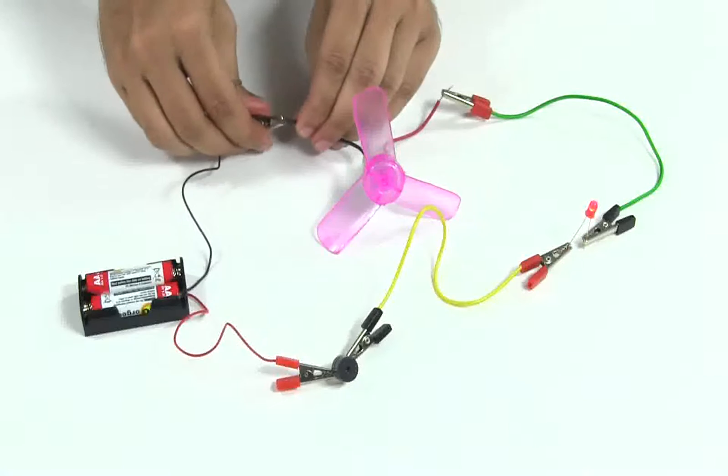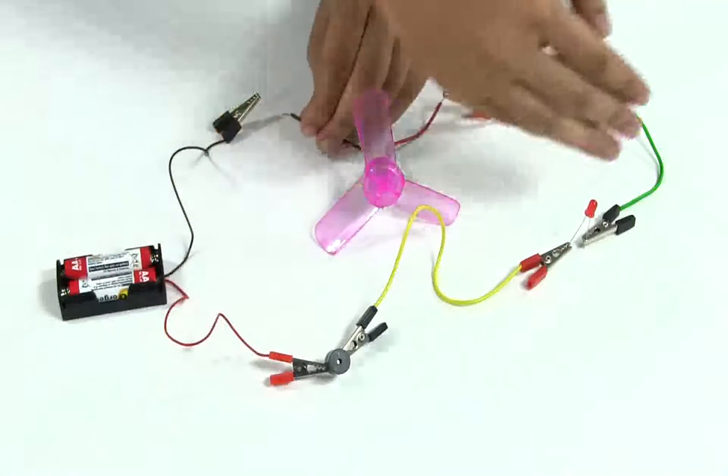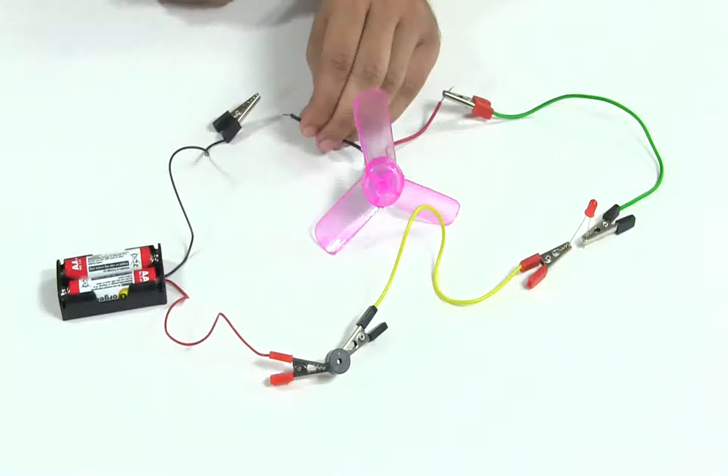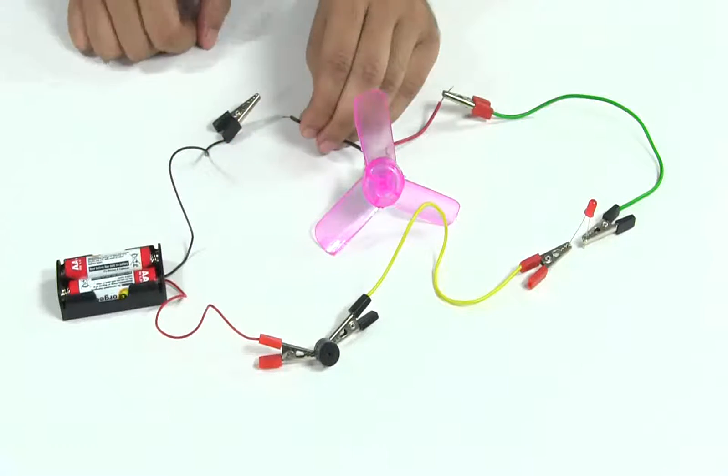As soon as I connect this, current will flow through all these elements in series. As the current is very low, the LED will be very dim and the buzzer will sound only a little, and the motor will not rotate.